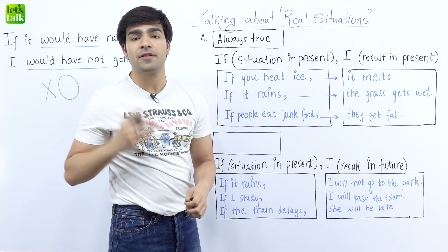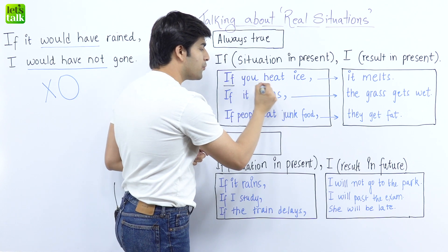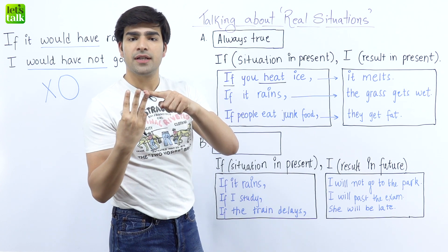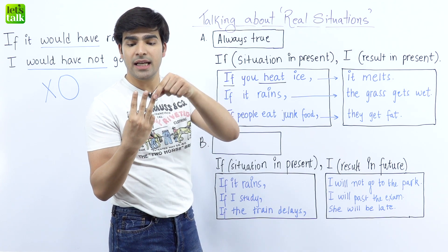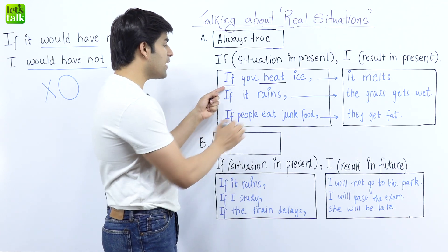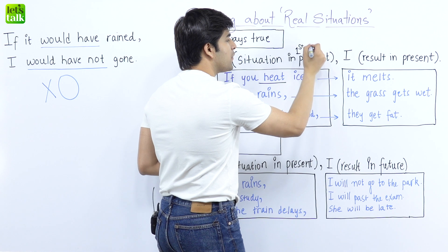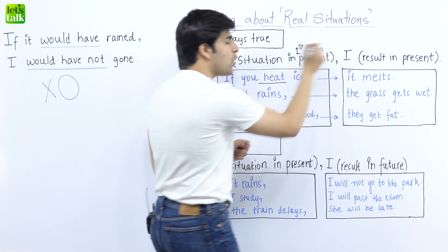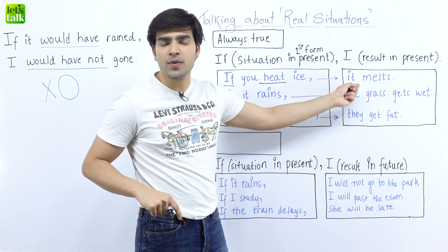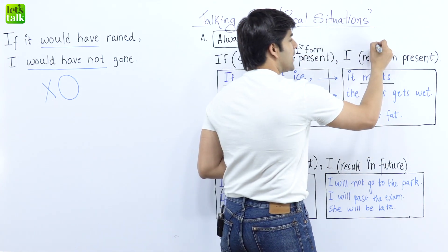So to talk about real life general fact situations, we use 'if', then we use a situation in the present, which is the verb here. Is it the first form of the verb? Heat — it is the first form of the verb. So to talk about real situations with 'if', you use the first form, also called the base form of the verb. After the comma, when we talk about the result, we again use the first form of the verb, which is 'melts' here.